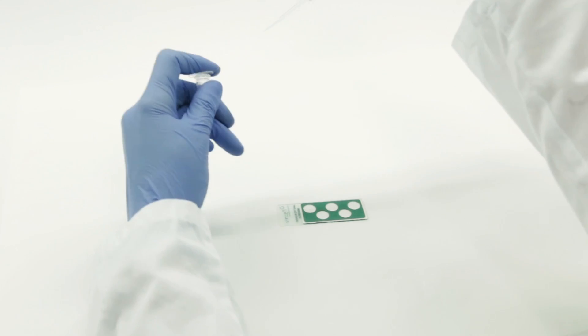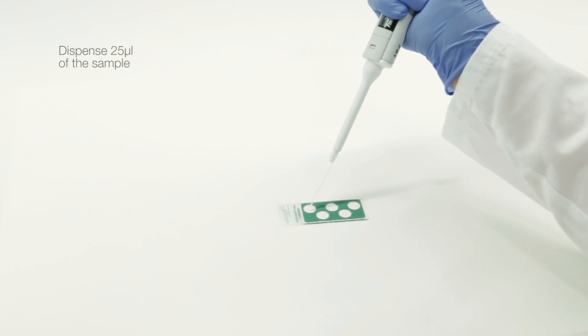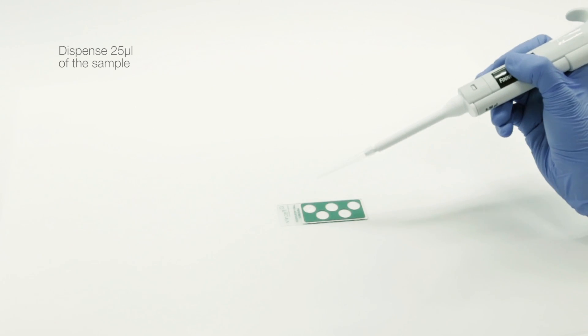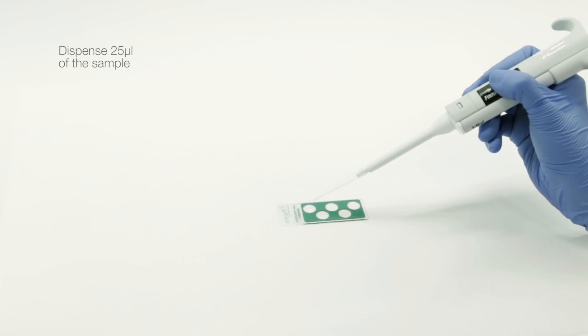Dispense 25 microliters of the suspension in one well of the screening slide. If the sample doesn't fully cover the well, use the end of the pipette tip to spread it around. At this point, you can check in the visible light microscope to make sure that the cell concentration is adequate.